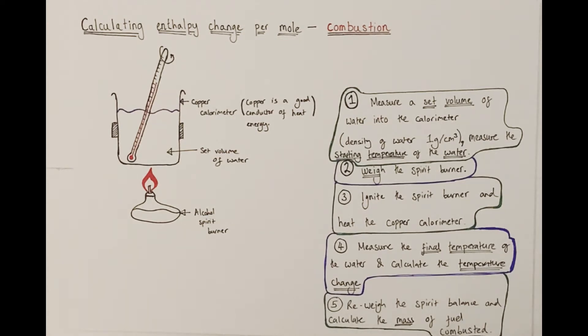We use a set volume of water for a very particular reason. You measure a set volume of cold water into your copper calorimeter. Water, very conveniently, has a density of one gram per centimeter cubed, meaning that your volume is equivalent to mass. Therefore, we also know the mass of water utilized and we measure the starting temperature of the water using a thermometer.